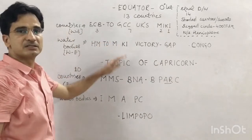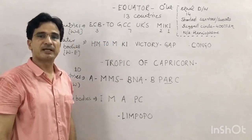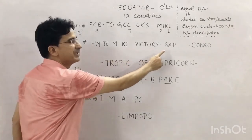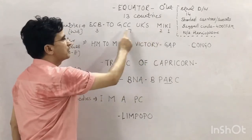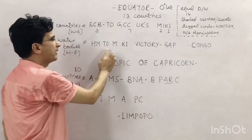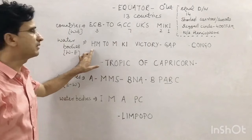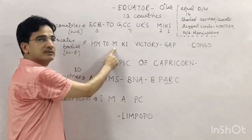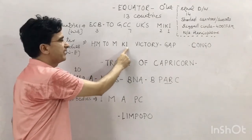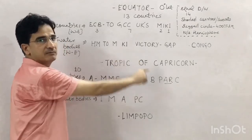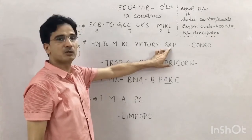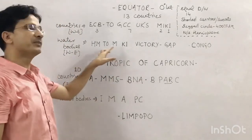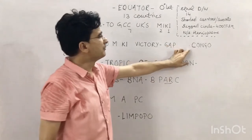These are the 13 countries through which the Equator passes. For water bodies, the trick is 'hum to M ki victory gap deke celebrate karengi' — because after joining GCC, Mickey's club won. The water bodies are: Halmahera Sea, Molucca Sea, Gulf of Tomini, Makassar Strait, Karimata Strait, Indian Ocean, Lake Victoria in Africa, Gulf of Guinea, Atlantic Ocean, and Pacific Ocean. Also note: River Congo, the deepest river in the world, crosses the Equator twice.